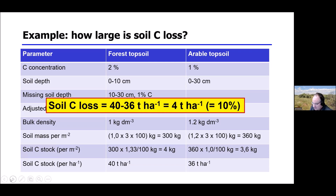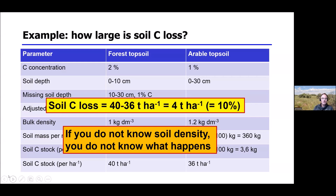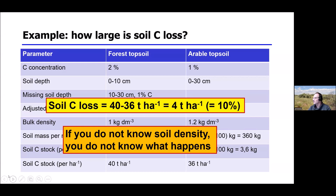This example shows you need bulk density to convert concentrations — in percent or grams per kilogram — into actual stocks, which are the multiplication of concentration with volume or mass. This matters ecologically: if you want to analyze whether nutrients change with fertilization or reduced fertilization practices, you always have to multiply by the mass and you need the bulk density.